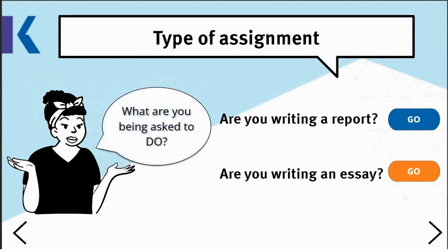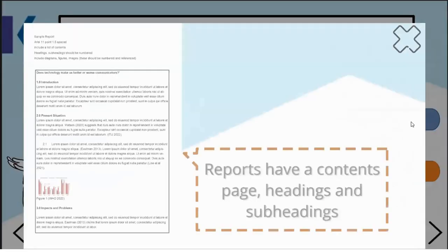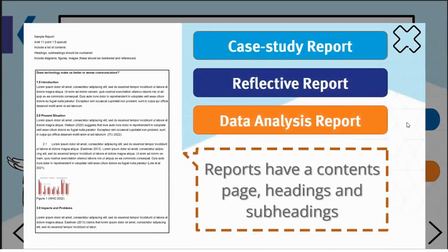Before you start writing and researching, check whether you're being asked to write a report or an essay — generally, academic writing falls into these two categories. Reports have content pages, headings and subheadings. You might be asked to write a case study report, a reflective report, or a data analysis report. Reports use subheadings, figures and diagrams, and all information should be numbered. Double check with your tutor if you're unsure whether to write in report style or essay style.